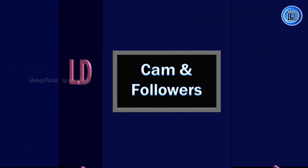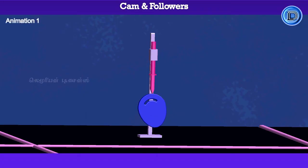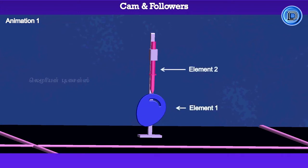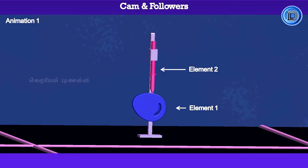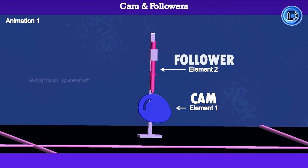What is Cam and Followers? See the animation — there are two elements. Element 1 is rotating, and it makes another element to reciprocate. The rotating element is called a Cam, and the reciprocating element is called a Follower. The Cam is a driver member, and the follower is a driven member.